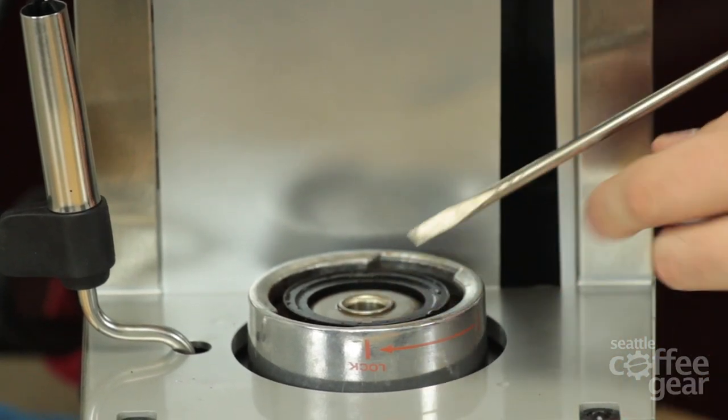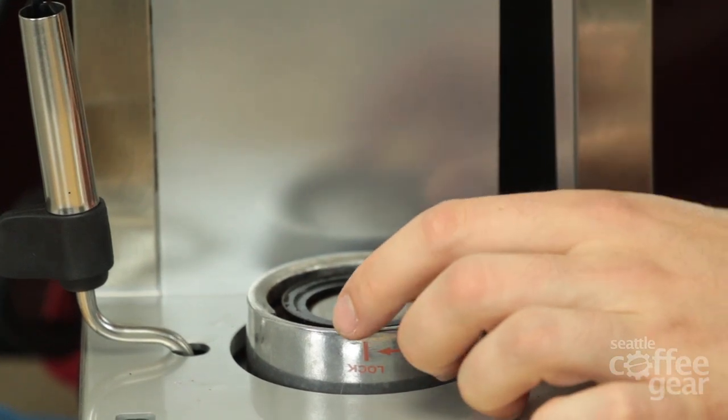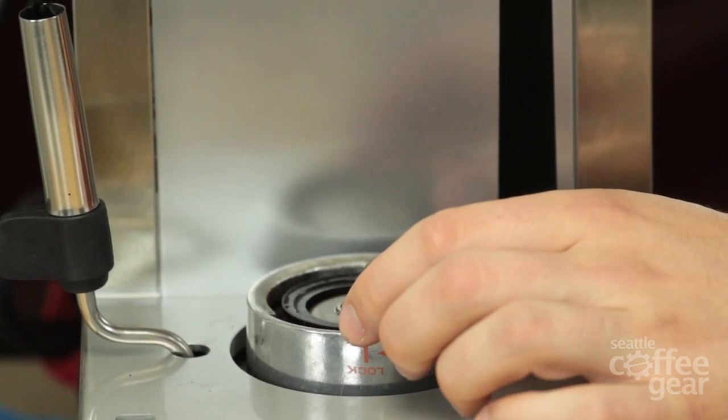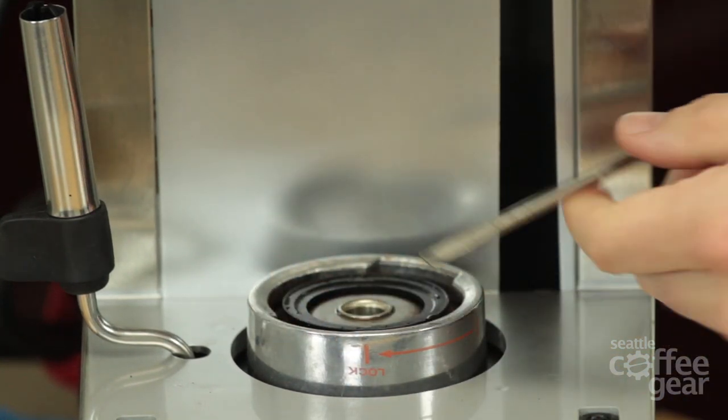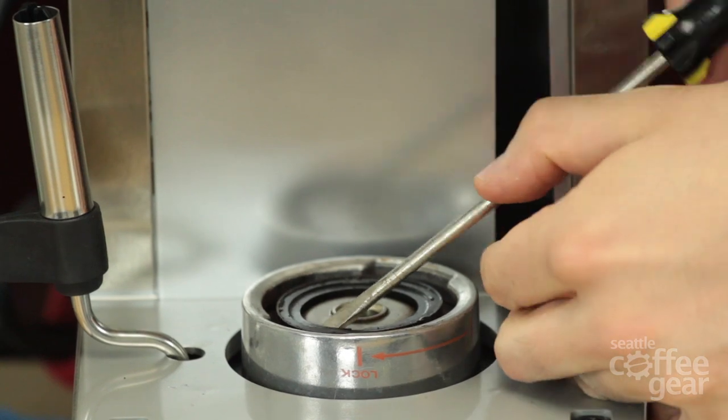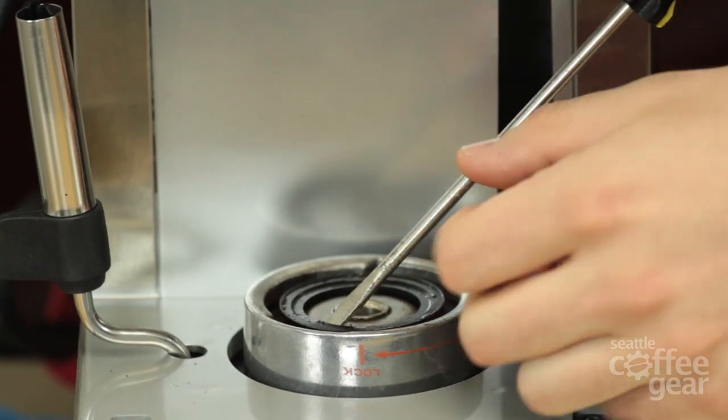So you should kind of start there. And then you should also use the portafilter channels in your brew head here to your advantage. There's more space there. So try to fold it that way and take it out through there. But we're just going to kind of get after it here and see what we come up with.